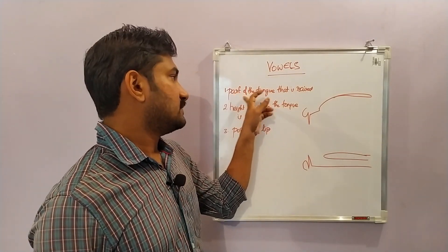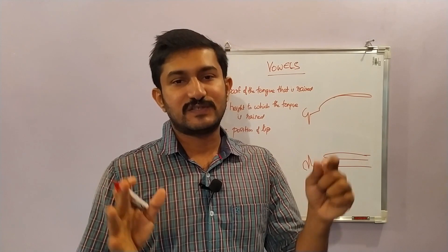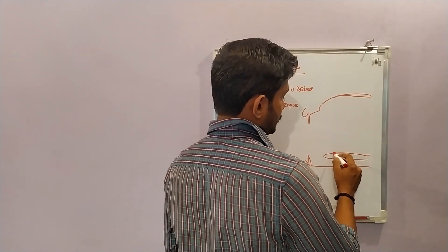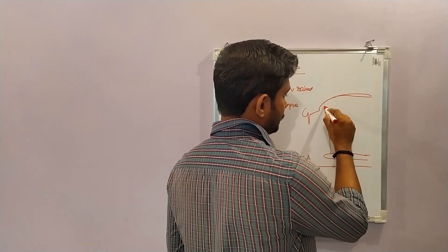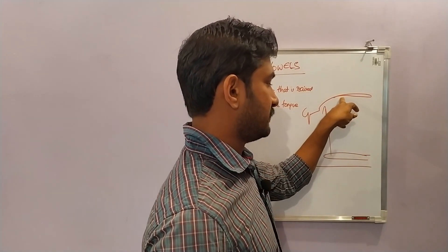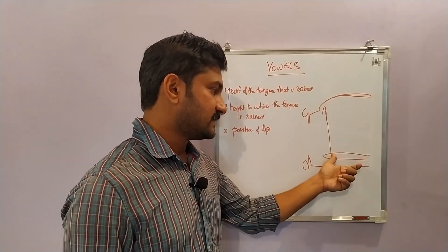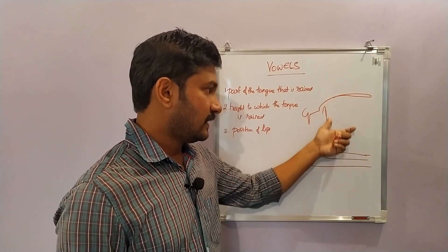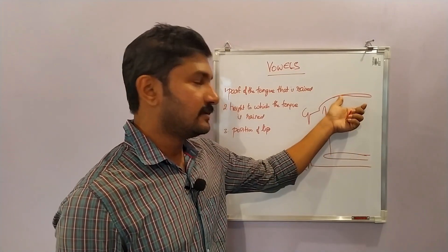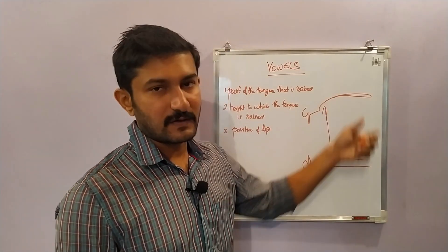Coming to the first category — the part of the tongue that is raised. In the articulation of a vowel, the tongue is not going to touch any part of the mouth; the tongue raises and lowers. The front part of the tongue can be raised towards the hard palate, the central part can be raised to the middle portion of the roof of the mouth, or the back part of the tongue can be raised towards the soft palate. Depending upon which part is raised, we call it a front vowel, central vowel, or back vowel.